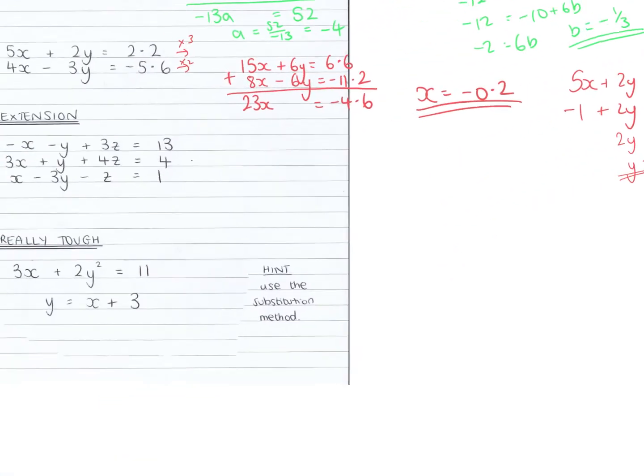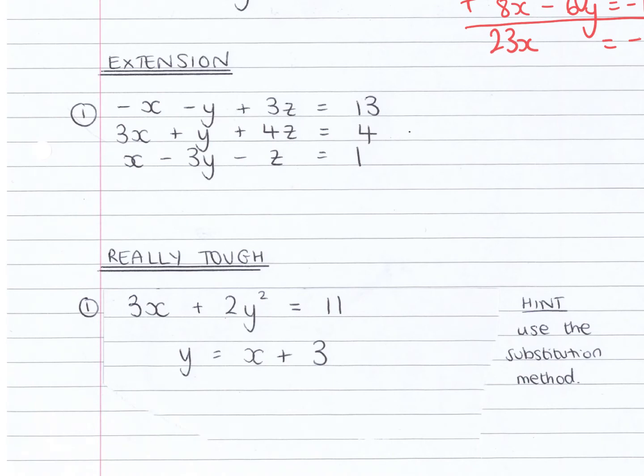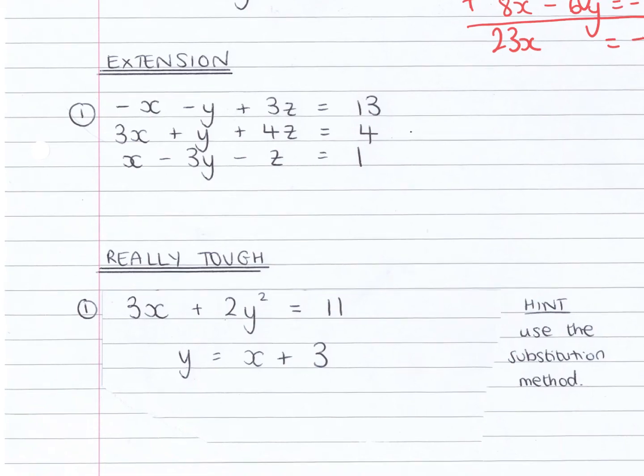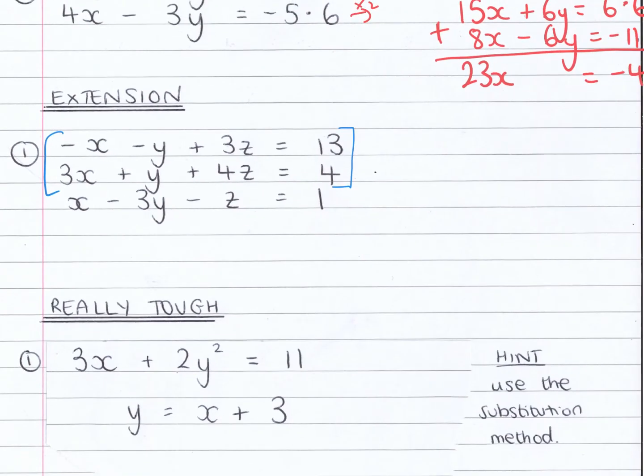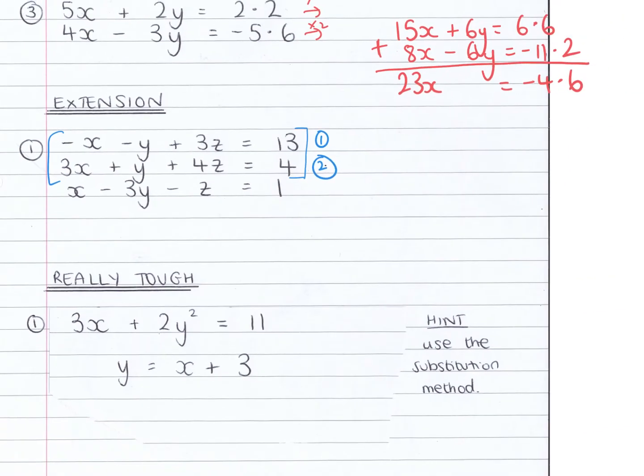Okay, those were all the standard ones. If you had a go at the extension ones, then the first one was from the further maths. We wanted to solve three simultaneous equations. So when we're solving three simultaneous equations, we just pick two and eliminate one letter and then pick another two. If I pick these top two and call that equation one and equation two, if I do equation one add equation two.